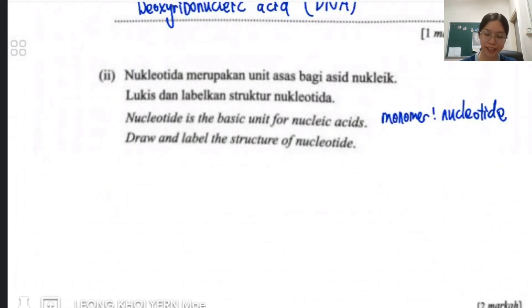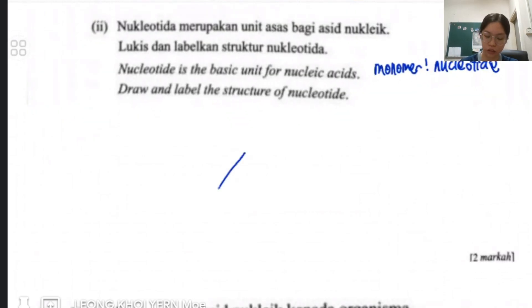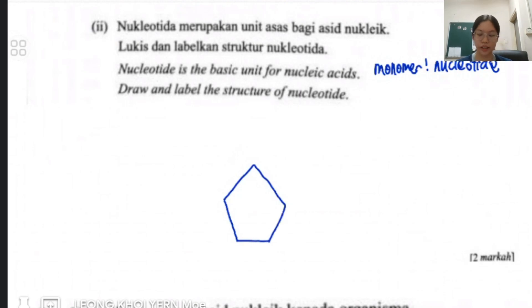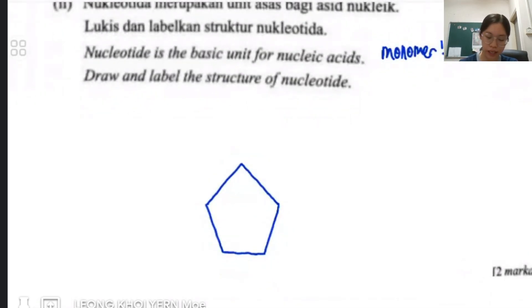How to draw? For the deoxyribose sugar, because it is a pentose sugar, the shape must be a pentagon — not a square or hexagon. You have to draw a pentose sugar with five sides. Then draw the phosphate group as a circle attached to it, and a nitrogenous base on the other side. Let me redraw it. Okay, so this is the pentose sugar.